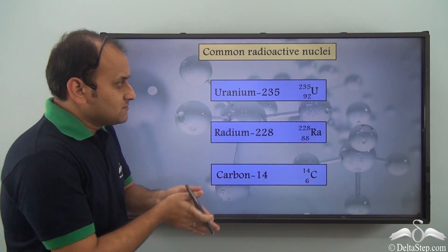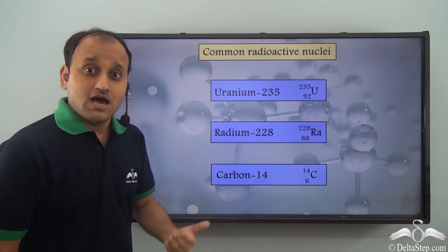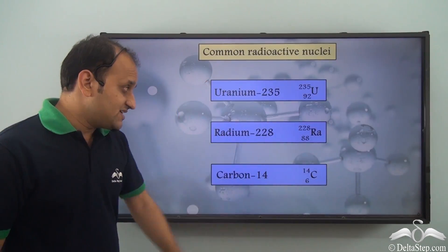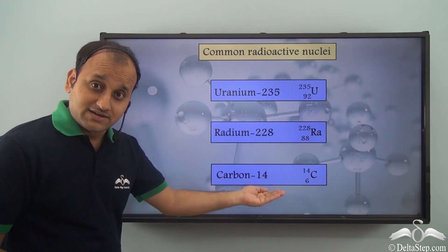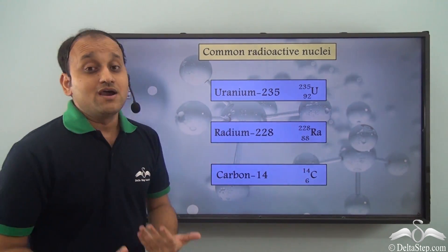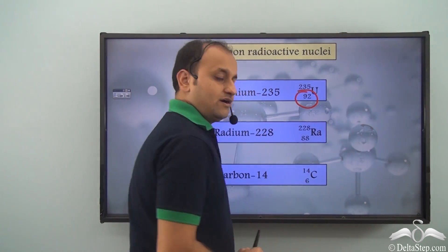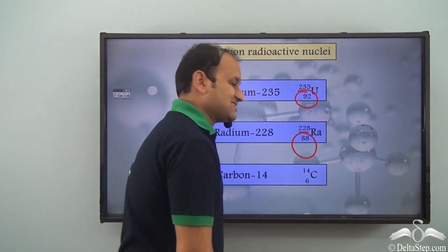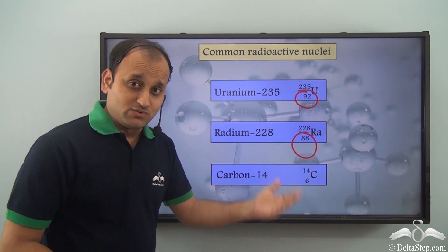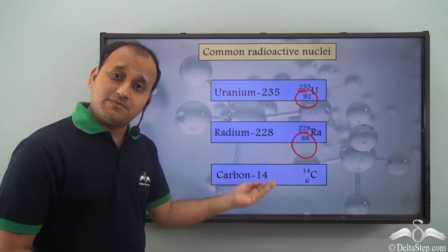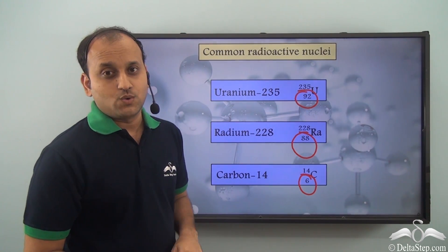Now what are some common radioactive nuclei? Uranium-235 with an atomic number of 92 is a radioactive element. Similarly, Radium-228 with an atomic number of 88 is again a radioactive element. Both have atomic numbers greater than 83, so we can understand that these have unstable nuclei and are radioactive. Also, Carbon-14 with an atomic number of 6 is also a radioactive element. But it has only 6 protons — still it exhibits radioactivity. Why is it so? Let's understand.